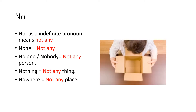The second indefinite pronoun is 'no', attached to a second word. 'No' as an indefinite pronoun means 'not any' — ولا حد، ولا شيء، ولا مكان. 'No one', or 'nobody' — no person, not any person, تعود على الشخص. 'Nothing' — not anything. 'Nowhere' — not any place.